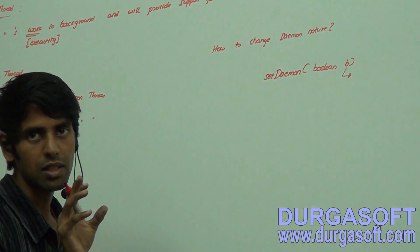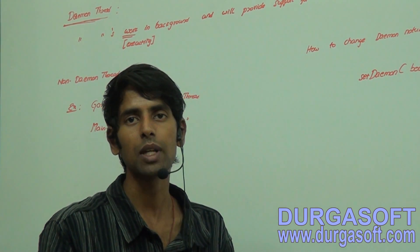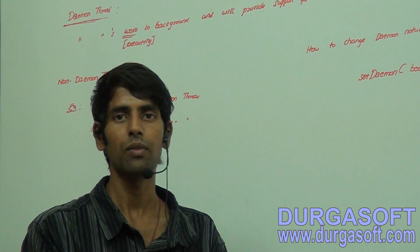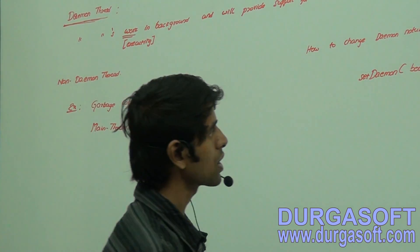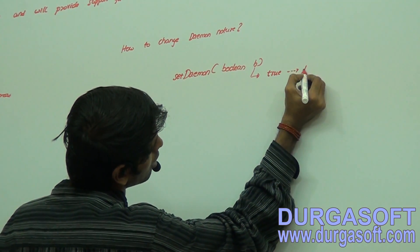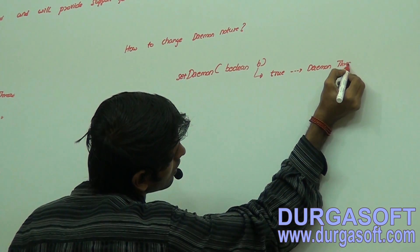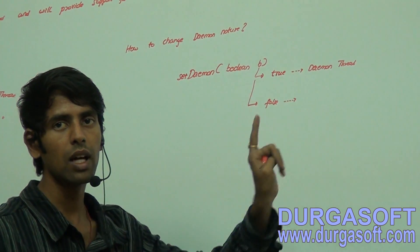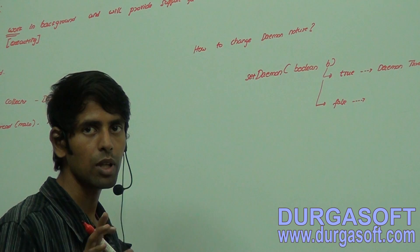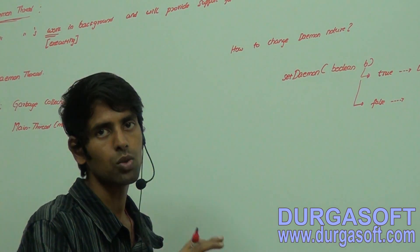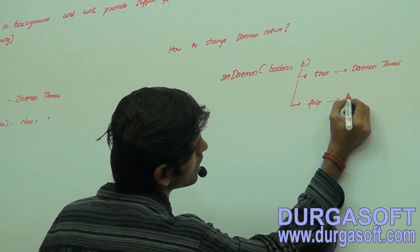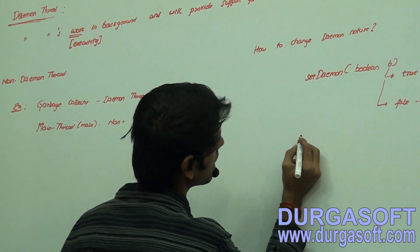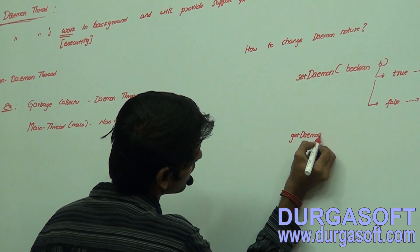The method is setDaemon(boolean b). If b is true, it is a daemon thread; if false, it is a non-daemon thread. Remember: true means daemon thread. To get the daemon nature, use isDaemon() — this returns a boolean. According to coding standards, methods returning boolean should use the 'is' prefix rather than 'get'.